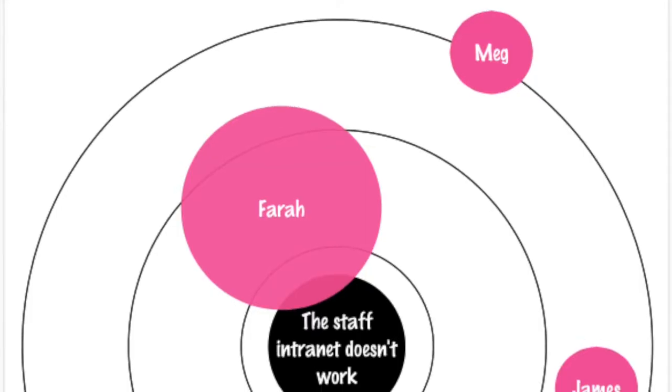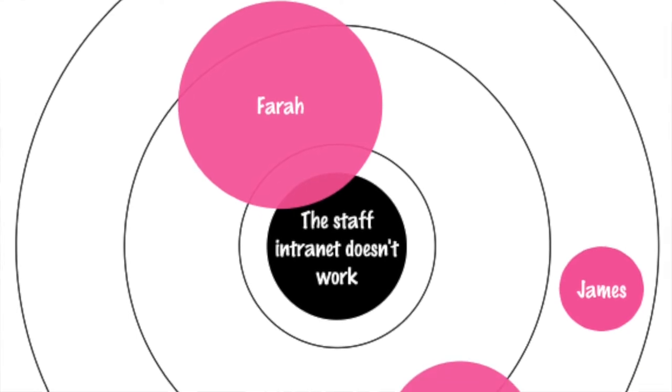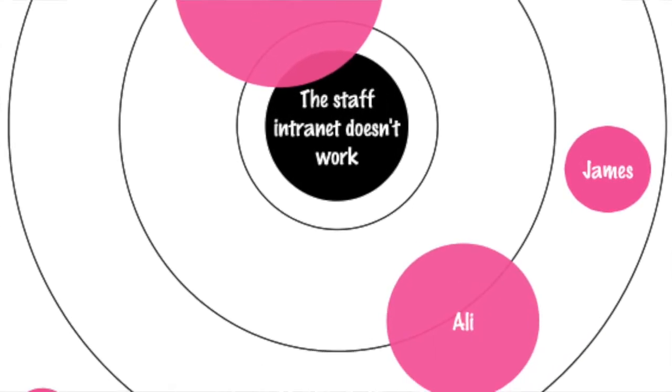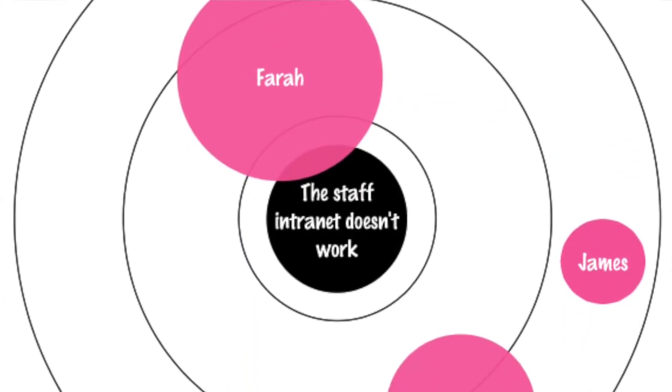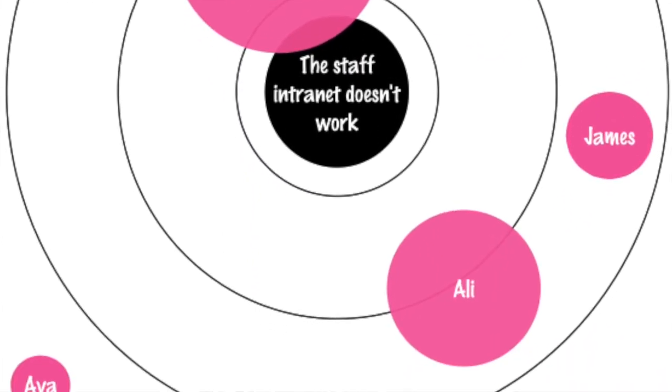We have our five stakeholders on the map giving us a snapshot of who they are and their proximity to the problem. The third point — their level of influence — is shown by how large their pink circle is. The larger the pink circle, the more influence that stakeholder has. So on this map all three of those points are covered.